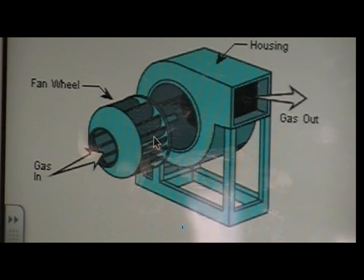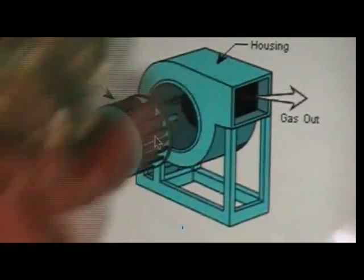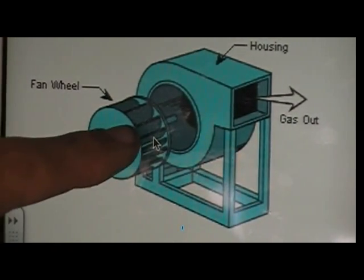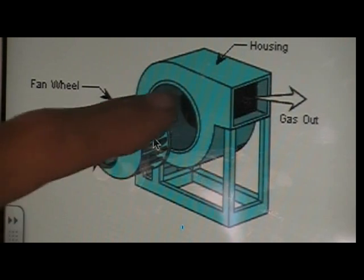There's three main components to a centrifugal fan. There's a motor, the fan wheel, and the housing.